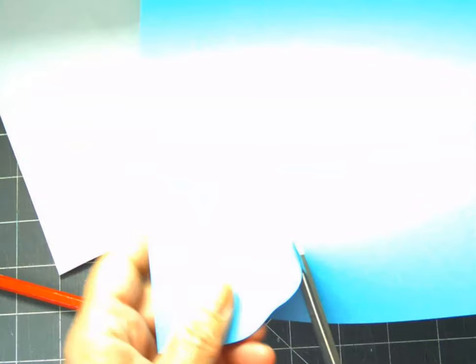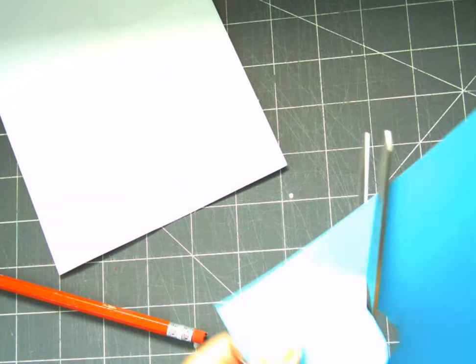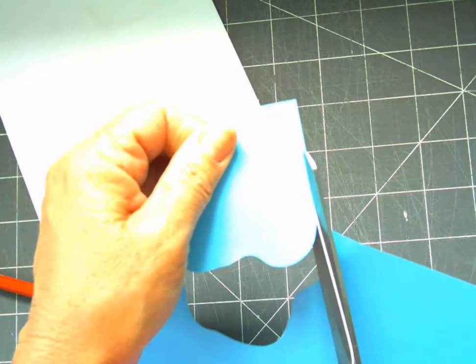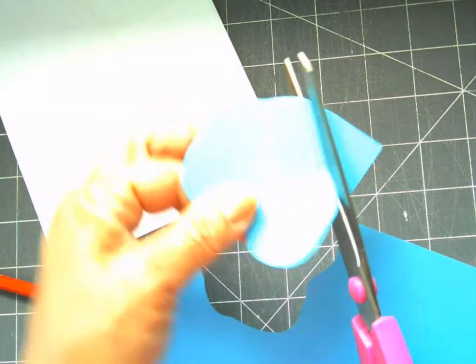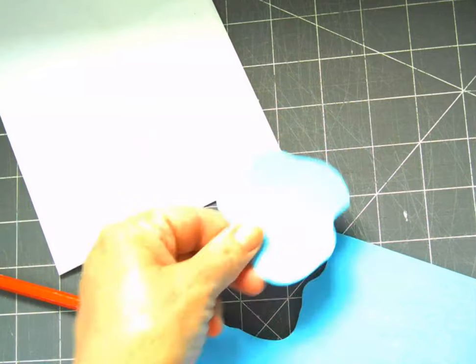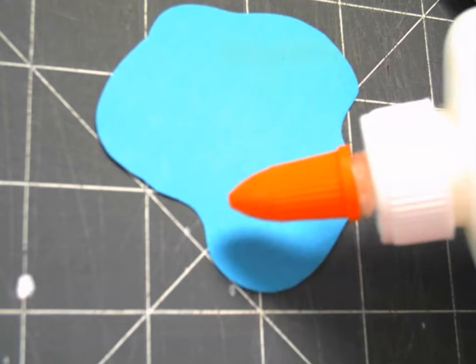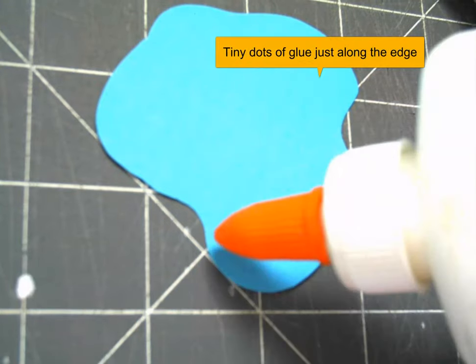Notice that when you cut, your scissor blade should not move. It's your opposite hand that's doing all the work. The opposite hand turns the paper in the direction that you want to go, and your scissors pretty much stay in the same direction, and in that way you have the most control.